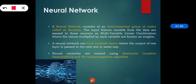A neural network consists of an interconnected group of nodes, which are called neurons. The input feature variables from the data are passed to these neurons as a multi-layer linear combination, where the values by which each variable is multiplied are known as weights. Generally, these neurons have values multiplied by each variable, and those values are nothing but the weights of that particular neuron.